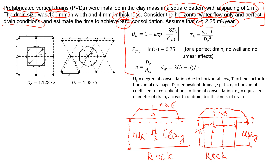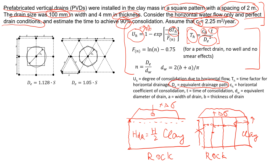Here are a few formulas that are very important and that we're going to use. This formula shows the correlation between the degree of consolidation — in our case 90% — and the time factor T_h. The time factor is described by this formula: T_h equals C_h times time divided by D_e squared, which is the equivalent drainage path. The factors N and D_w determine the effect of the vertical drain spacing and pattern.